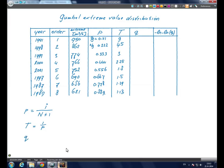And the probability of non-exceedance, which is Q equals 1 minus P. For the first year, the second year, third year, fourth, fifth, and the last one.